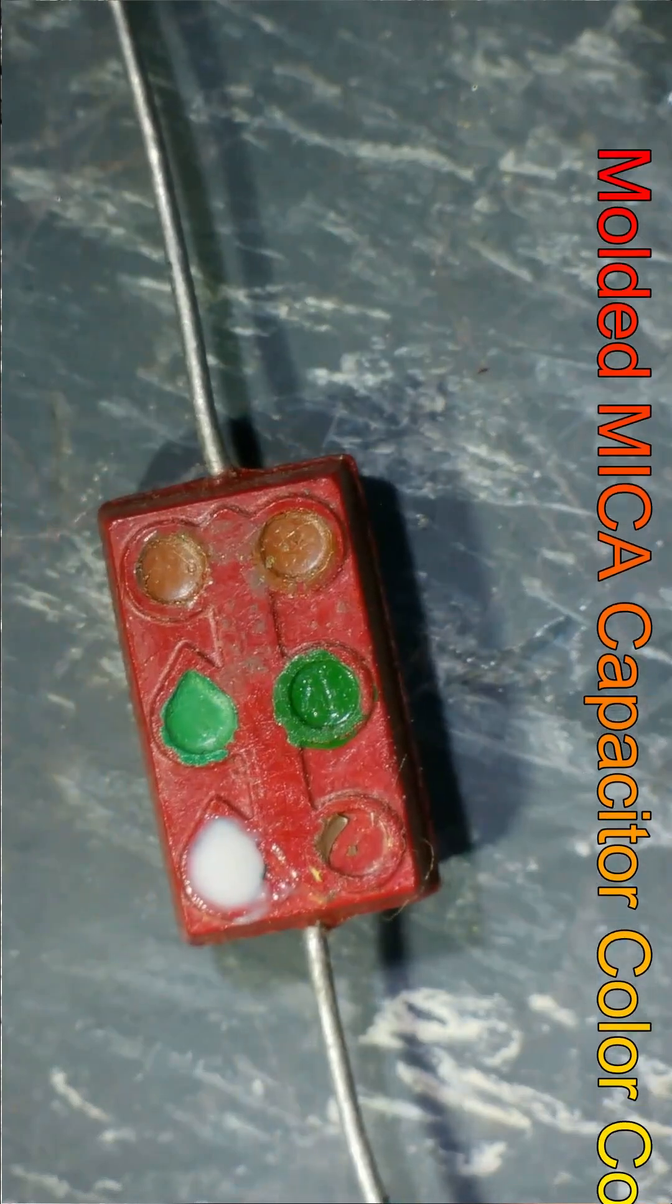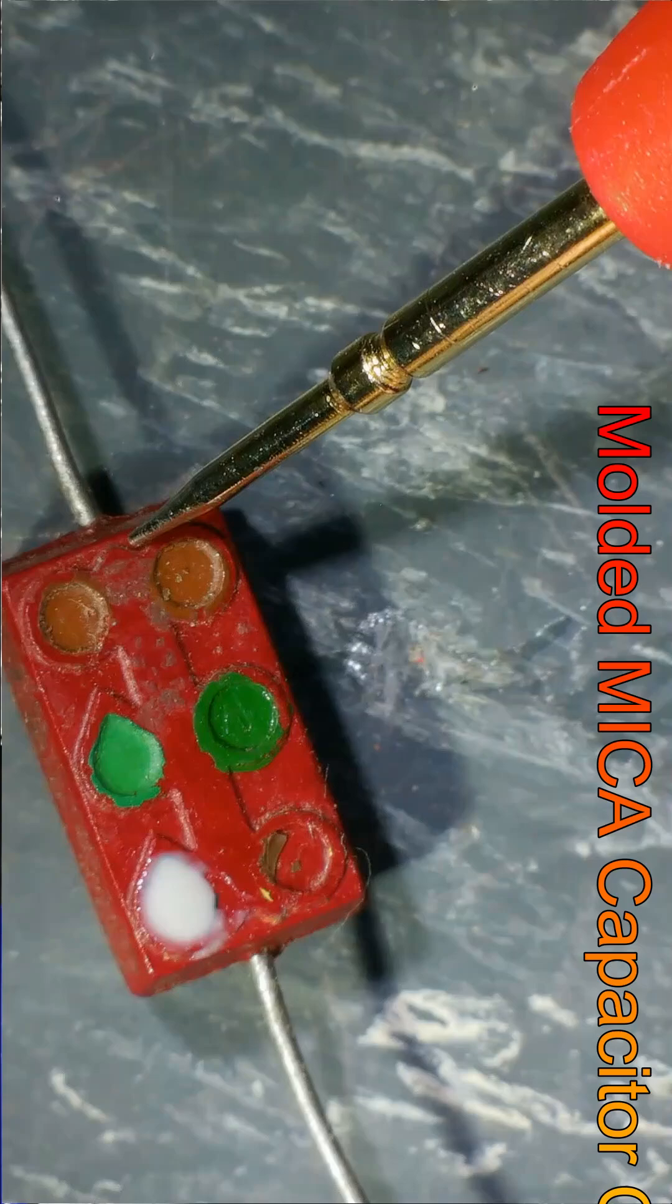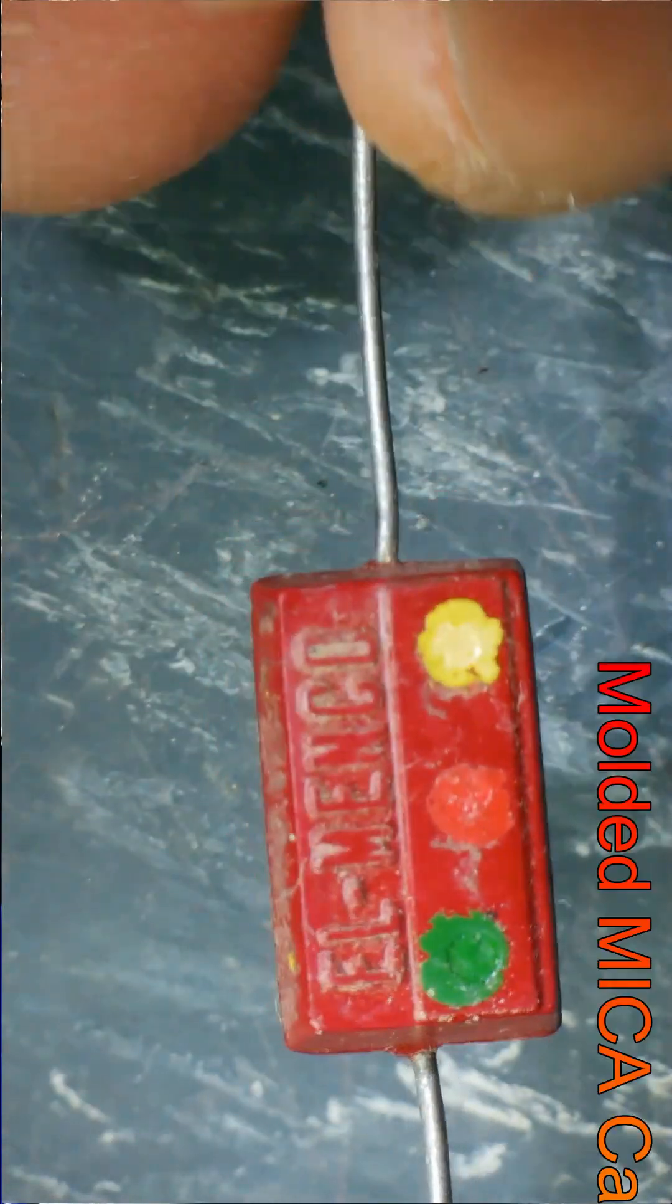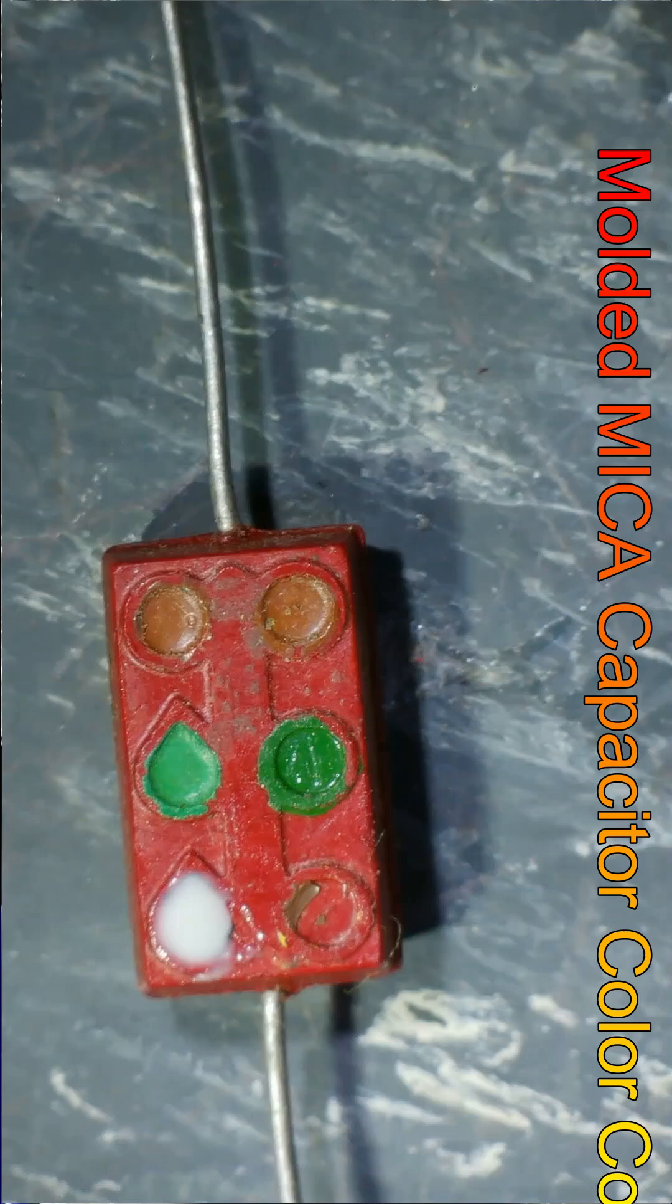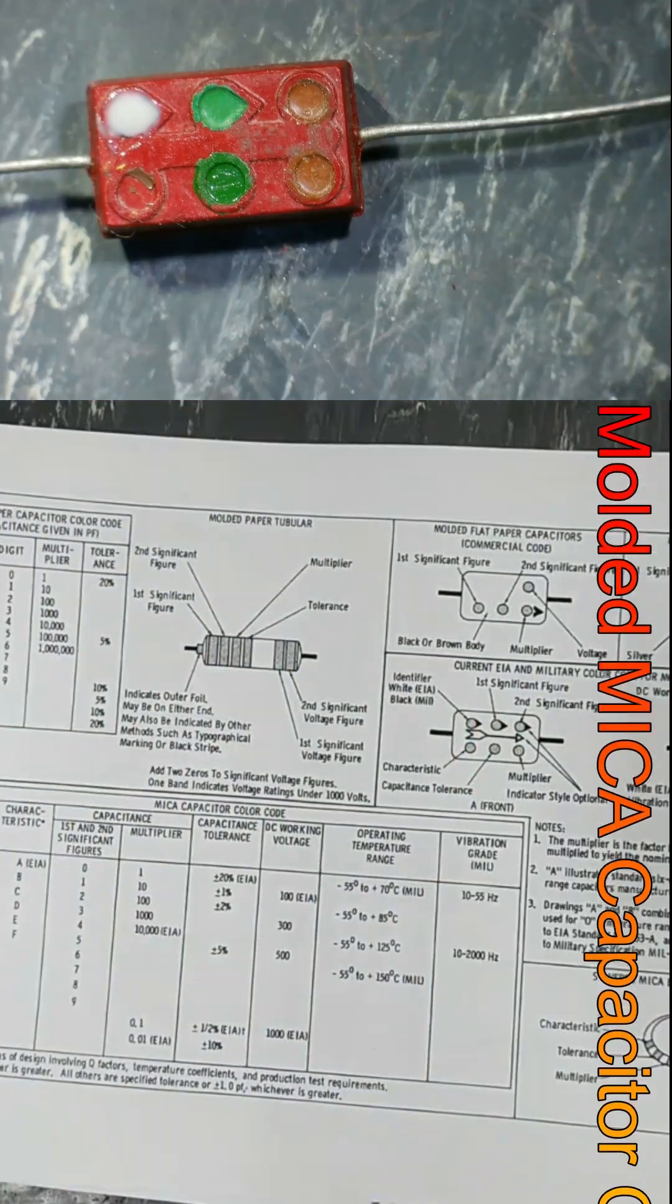Looking at this mica capacitor color band marking from this side with the arrow, on the second side there are three dots. Let's decode this capacitor. The first dot is white, indicating an EIA capacitor. The second